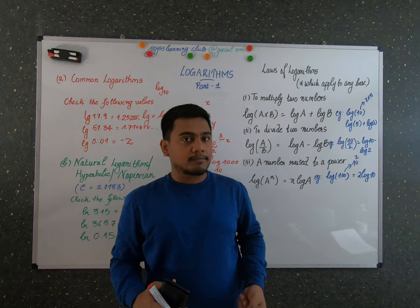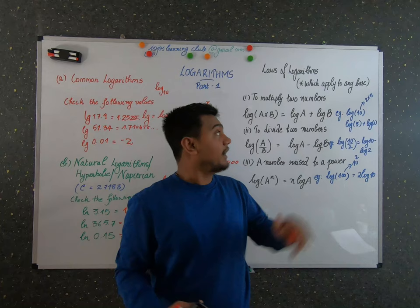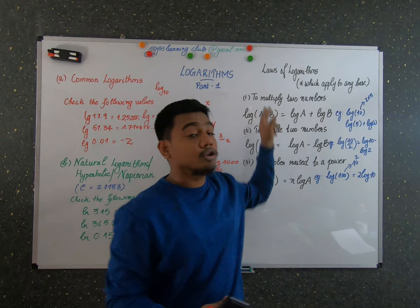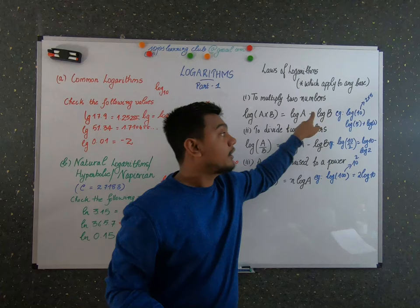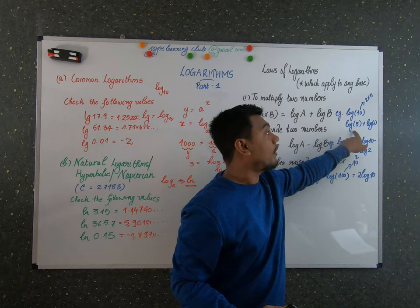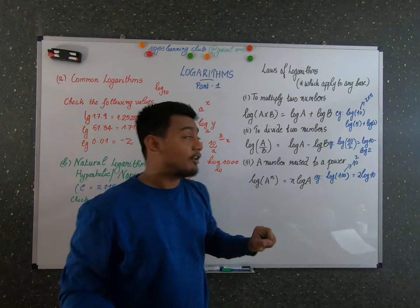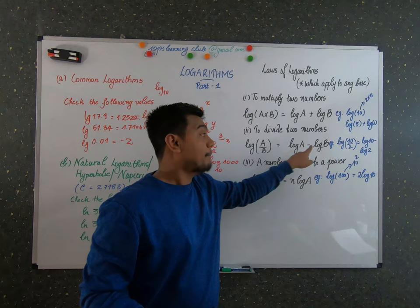Now let's understand the rules of logarithms, or how to solve problems using them. There are three laws of logarithms. First, to multiply two numbers: log of A times B equals log A plus log B. For example, log 10 equals log 5 plus log 2. Second, to divide: log of A divided by B equals log A minus log B.